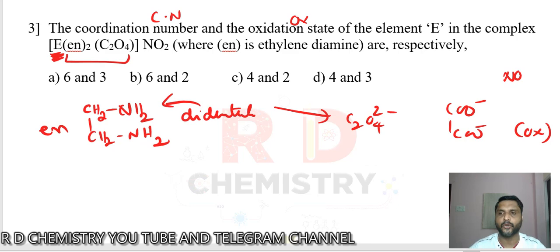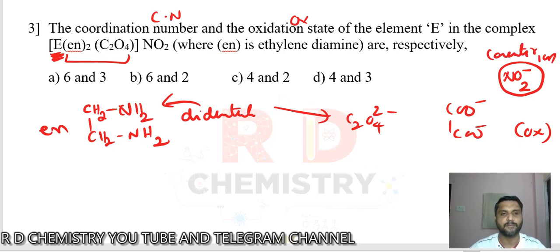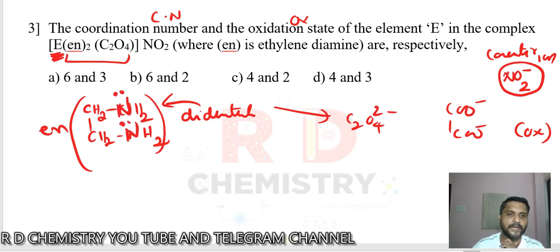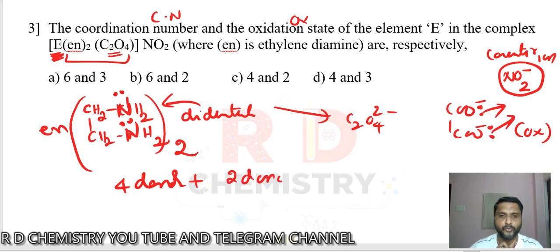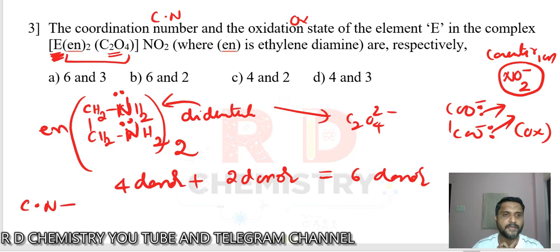The question asks for the coordination number, which is the number of donor atoms present. In one EN there are 2 nitrogen donor atoms (they donate electron pairs), and there are 2 EN ligands, so 4 donor atoms total. Plus 1 oxalato ligand — oxygen is the donor atom and it is bidentate, so 2 donor atoms. Total donor atoms: 4 + 2 = 6. Therefore the coordination number equals 6, narrowing the answer to options A or B.